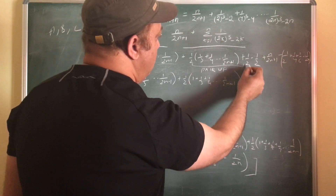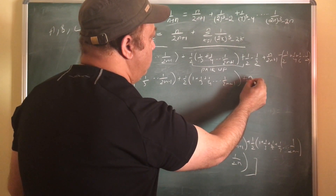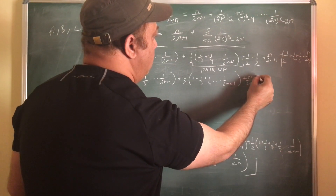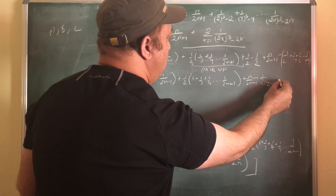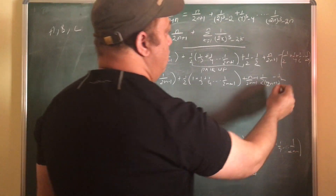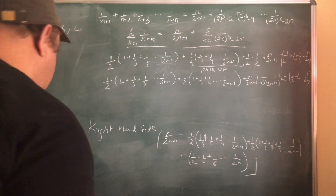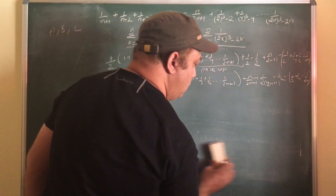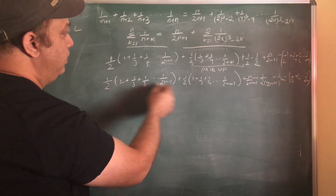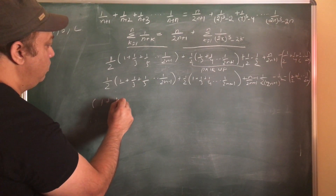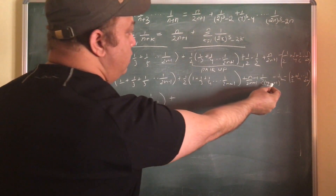Taking 1 upon 2n plus 1 outside the bracket, this would give us 1 plus 1 upon 3 plus 1 upon 2n plus 1 plus 1 upon 2 plus 1 upon 2n minus terms. Since I am factoring 2n plus 1 out, I have taken this particular half, so this gives me 1 here. Looking at the result, we can add these two expressions together, giving us the series 1 upon 3 plus 1 upon 5 and so on, while the remaining expression evaluates to 0.